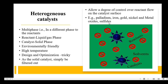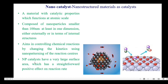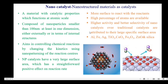Now let's move on to nano catalyst, that is nano structured material as catalysts. A nano catalyst is a material with catalytic properties which functions at atomic scale. It is composed of nanoparticles smaller than 100 nanometers at least in one dimension, either externally or in terms of internal structures. A nano catalyst aims at controlling chemical reactions by changing the kinetics using nanopatterning of the reaction centers. Nanoparticle catalysts have a very large surface area, which has a straightforward positive effect on the reaction rate — more surface is available to the reactants, meaning a higher percentage of atoms on the surface, and thus higher activity.